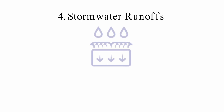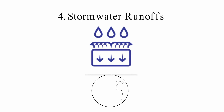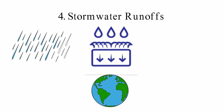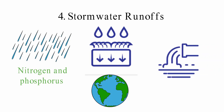Stormwater runoffs: Earth's atmosphere is made up of about 78% nitrogen, making it the most common element and easy to obtain. People who live near bodies of water that get a lot of rain might see nitrogen and phosphorus build up in them. Over time, stormwater runoffs can pollute the water with a lot of nutrients.